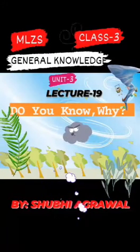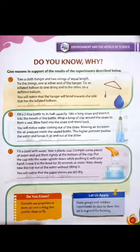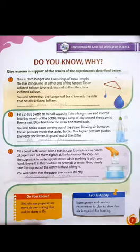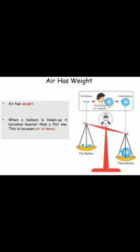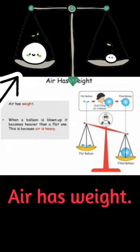First, in this topic, we have to give reasons in support of the results of the experiments described below. So first experiment: take a cloth hanger and two strings of equal length. Tie the strings one at either end of the hanger. Tie an inflated balloon to one string and to the other tie a deflated balloon. You will notice that the hanger will bend towards the side of the inflated balloon, because air has weight.